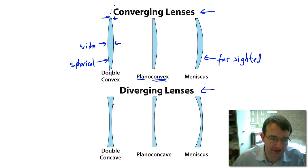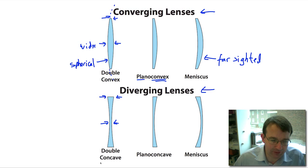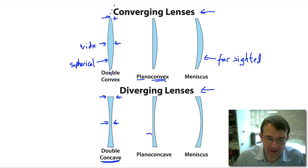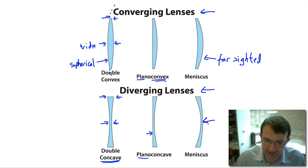For diverging lenses we have the double concave — again, spherical surfaces, but now narrower in the centre and wider at the edges, which is the common feature of a diverging lens. We call them concave because they bend inwards. To remember the difference: concave forms a small cave. Then there is plano-concave — spherical on one side and flat on the other. And again we have the meniscus lens — if you're short-sighted like me, this is the type of lens in your spectacles.